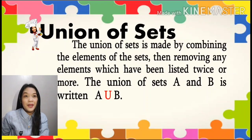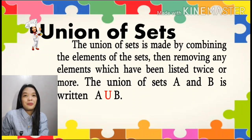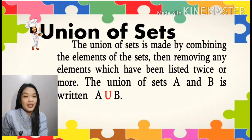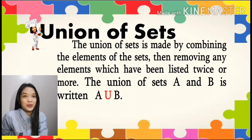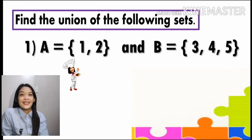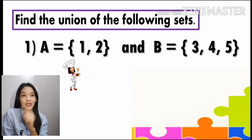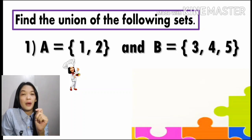The union of sets is made by combining the elements of the sets, then removing any elements which have been listed twice or more. The union of sets A and B is written as A∪B, and the symbol for that is the U which means the union. Find the union of the following sets: set A has the elements one and two, and set B has the elements three, four, and five. Now we're going to find A union B.